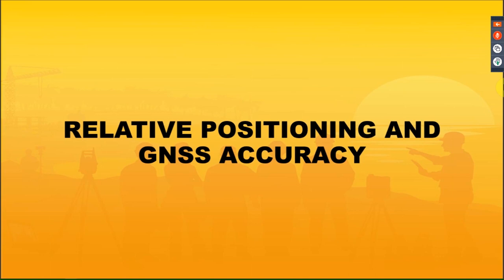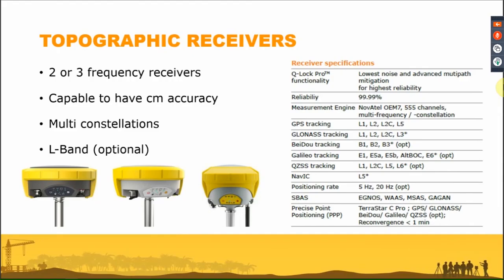Now we'll see how to check information from receiver specifications regarding GNSS positioning accuracy. Talking about a topographic receiver means talking about a receiver that can achieve centimeter-level accuracy. First, we need to check how many frequencies we can track — for example, L1 and L2 — and whether we can track additional frequencies. The Zenith 40 receiver, for example, is capable of tracking GPS frequencies L1, L2, L2C, and L5.